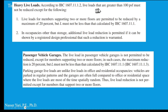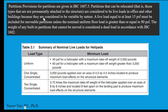Per IBC, live loads greater than 100 pounds per square foot must not be reduced — keep it, do not reduce it. Live load for members supporting two or more floors are permitted to be reduced by a maximum of 20 percent, but L must not be less than calculated by IBC. For passenger vehicles in a garage, that code also applies. Partition provision: partitions that can be relocated and are not permanently attached to the structure are considered live load in office and other buildings because they are variable by nature. The code requires a live load of 15 pounds per square foot for partitions; however, if your live load is more than 80 pounds per square foot, you cannot use the partition load.